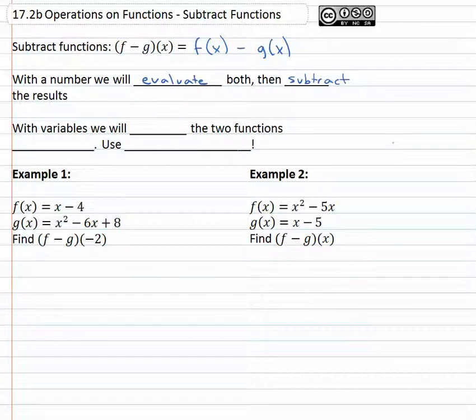With variables this is even simpler. We will just subtract the two functions together. With subtraction it's really important to use parentheses, so we're subtracting the entire function, not just the first term.